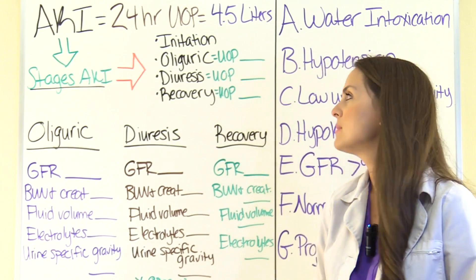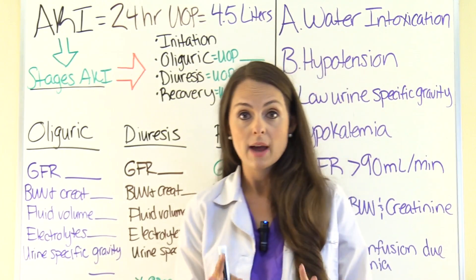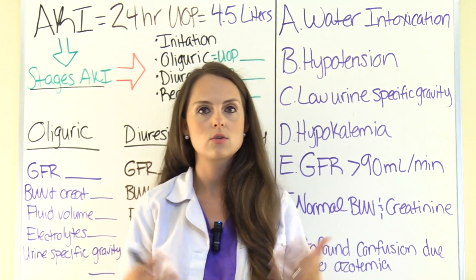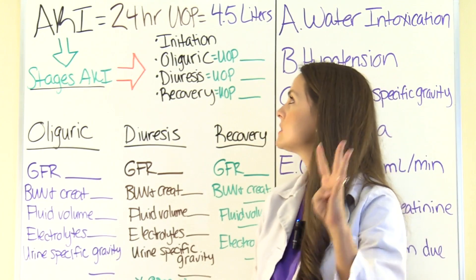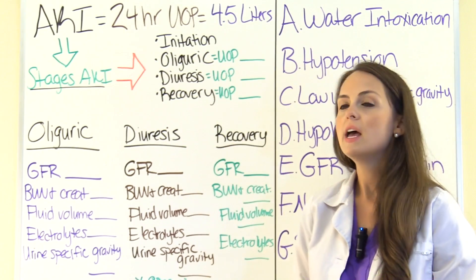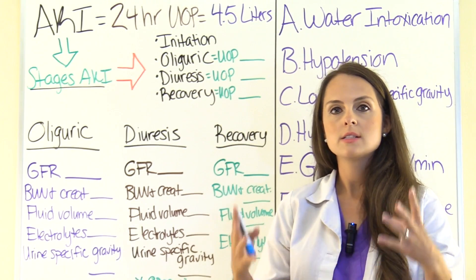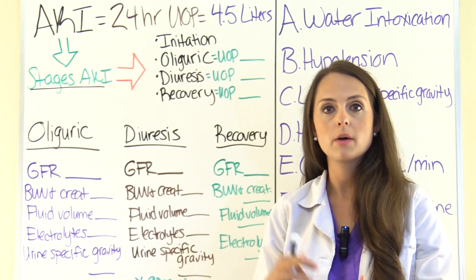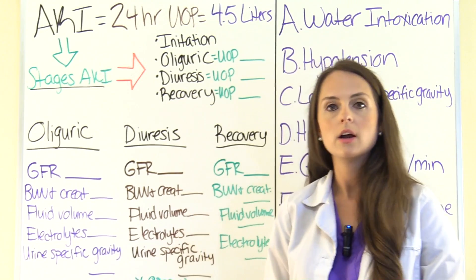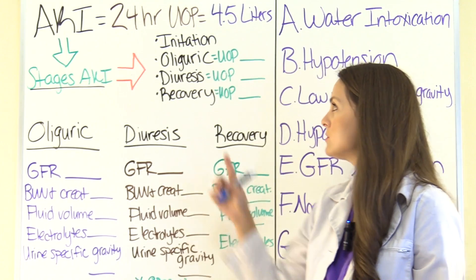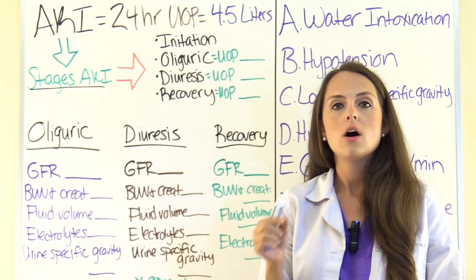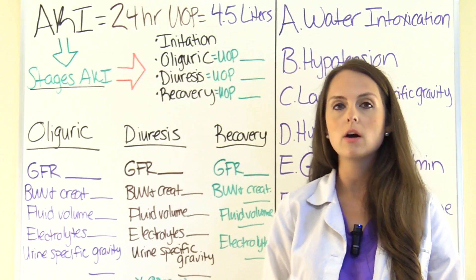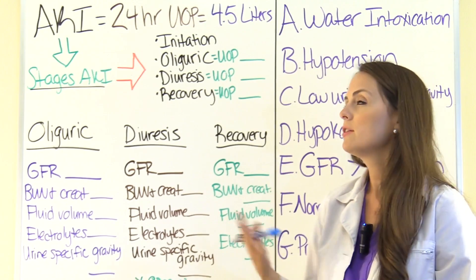There are four stages of AKI. The first is the initiation stage, where there has been a cause of injury to the kidney — pre-renal, intra-renal, or post-renal causes. When signs and symptoms appear, the patient moves to another stage: either the oliguric or the diuresis stage. Not all patients go from initiation to oliguric; they may skip oliguric and go straight to diuresis. So you always want to be watching that urinary output. Our patient is not in the initiation stage.